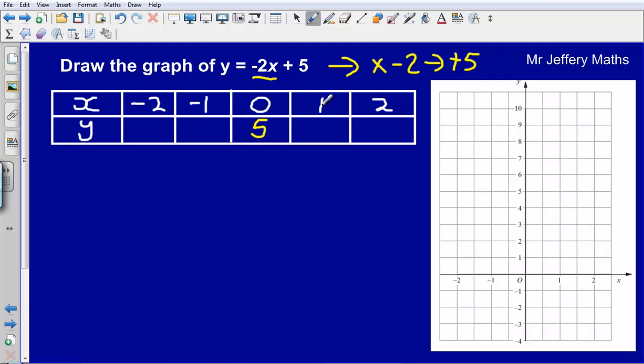So next one we'll do 1 multiplied by minus 2 which gives us minus 2. Then add on 5 gives us an answer of 3. Then the next one 2 multiplied by minus 2 gives me minus 4. Then add on 5 gives me 1.